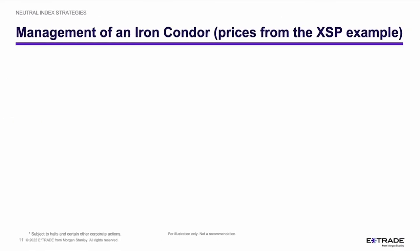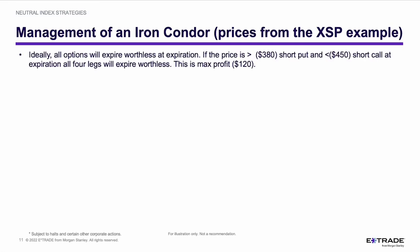Let's assume we move forward and place that iron condor on the XSP. Ideally, at expiration, all four legs are going to expire worthless — that's going to happen if the price is greater than $3.80 (the short put) and less than $4.50 (the short call). In that situation, all four legs expire worthless, the $120 credit remains in your account, your obligation is over, and you can do with that $120 whatever you like — that's your maximum profit.